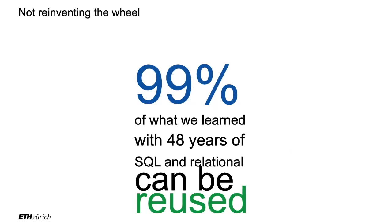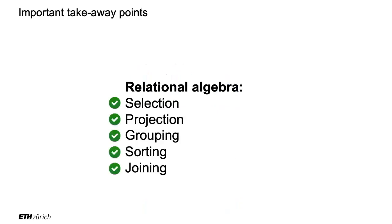But I have good news. Even though we'll have to find another way, a lot of what was invented in the past 50 years can be reused — in fact, the vast majority of it. Selections, projections, grouping, sorting, joining — all of that we'll still have in big data at very large scales.